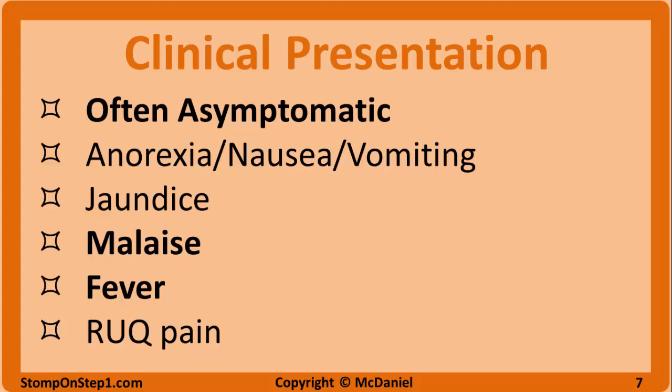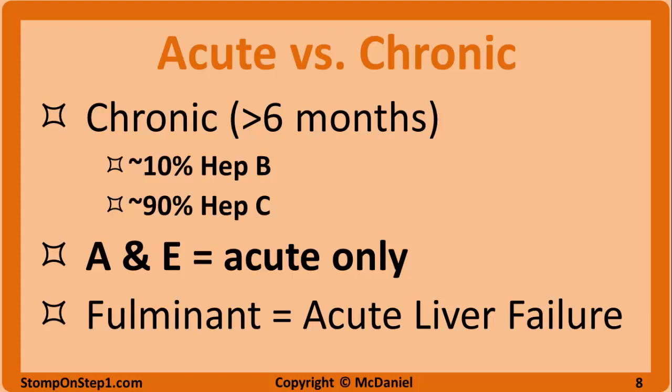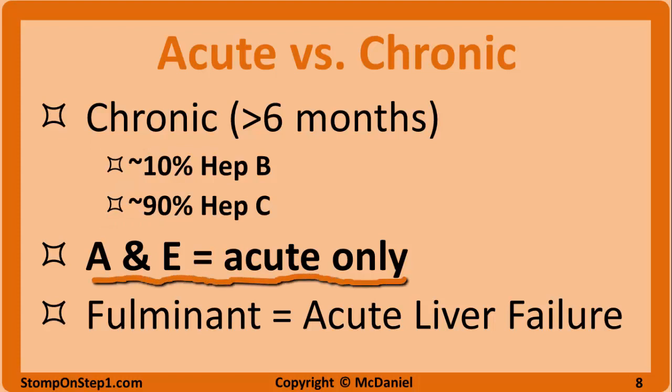Hepatitis B is associated with polyarteritis nodosa, or PAN, which we will discuss in further detail in the vasculitis section. In most cases of viral hepatitis, acute inflammation is self-limited and quickly resolves without causing permanent damage. However, certain types of hepatitis can progress from acute to chronic hepatitis, with inflammation lasting longer than six months. Chronic hepatitis can be symptomatic or subclinical, referred to as a chronic carrier. Long-term complications include fibrosis, scarring, cirrhosis, and an increased risk of hepatocellular carcinoma. Hepatitis B, C, and D can progress to chronic hepatitis. About 10% of hepatitis B cases progress to chronic hepatitis, while about 90% of hepatitis C progresses to chronic hepatitis. Just remember C for chronic. Hepatitis A and E can't progress to chronic hepatitis — think A for acute only.